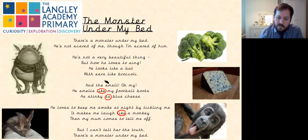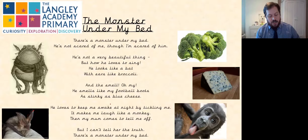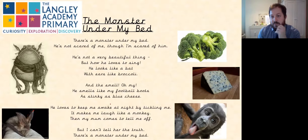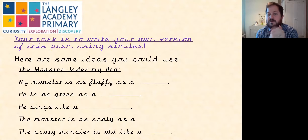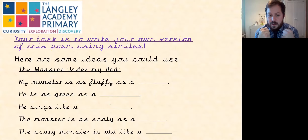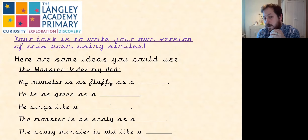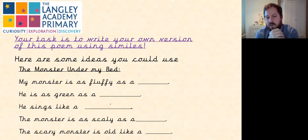Your job is to rewrite this poem and change the details to your room. You can change more than that if you like, in the different bits in between, but your main aim is to change the similes. If you need a little help, you could use some of these ideas: my monster is as fluffy as a..., he's as green as..., he sings like a..., the monster is as scaly as a..., and the scary monster is old like a... You can fill in the blanks and use these ideas to form your own monster under the bed poem.